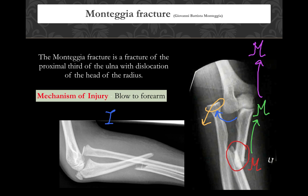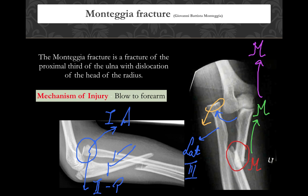Monteggia was classified by Bado into four types according to the direction of radial head dislocation. If the radial head went anterior, it was Monteggia type 1; if posterior, type 2; if lateral, type 3; and if there was a fracture of both bones with dislocation of the radial head, it was Monteggia type 4. Type 1, where the radial head goes anterior, is the most common. This was asked in Andhra PG 2016, where the answer was Bado's type 1.